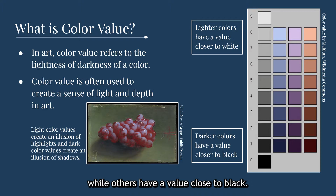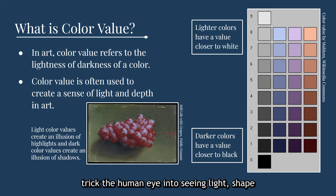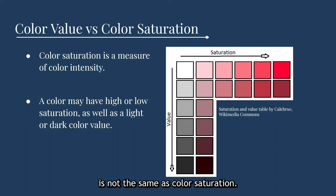If you're trying to create a sense of three-dimensionality, value is even more important than color because it helps trick the human eye into seeing light, shape, and depth in a two-dimensional art piece like a painting, a photograph, or a quilt. Color value is not the same as color saturation. Instead of lightness and darkness, color saturation is a measure of color intensity. A color may have high or low saturation, as well as light or dark color value.